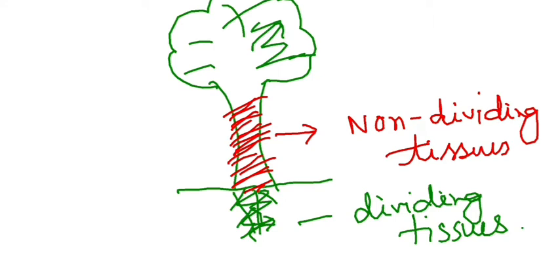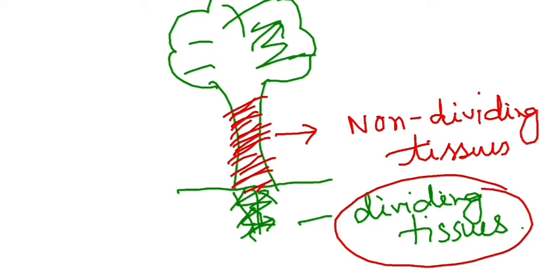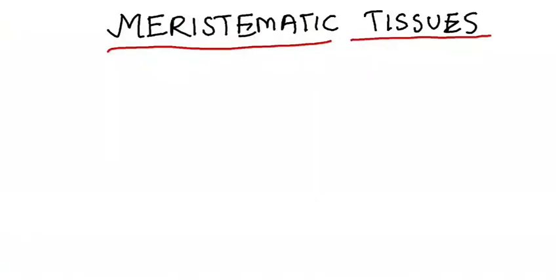Today we are going to learn the concept of dividing tissues. Dividing tissues are essentially called meristematic tissues — don't get scared with the names. Biology is all about the terms, so you have to practice them again and again to remember. Meristematic tissues are basically of three types.